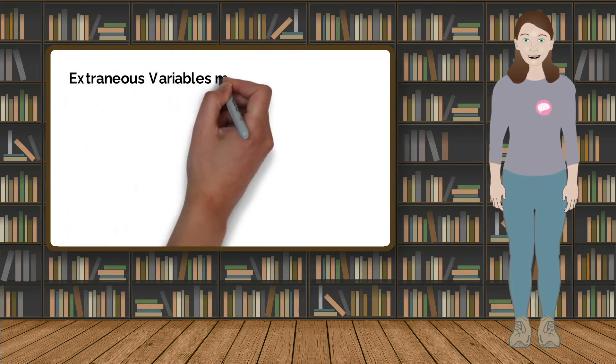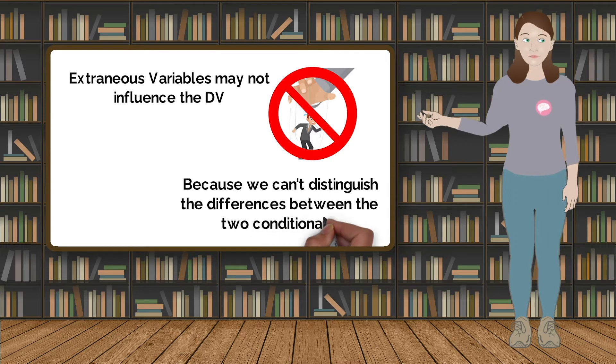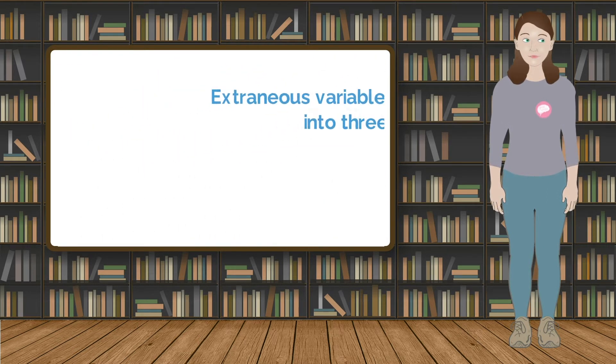We do not want extraneous variables to influence the dependent variable, because then we cannot distinguish the differences between the two conditional groups. Extraneous variables can be separated into three classes.